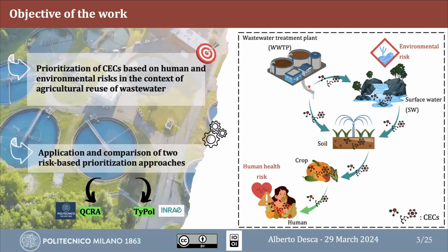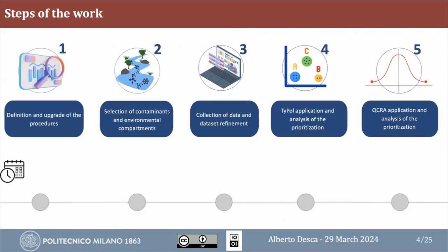The aim of my work was to prioritize these contaminants based on human and environmental risk in the context of agricultural use of wastewater — by applying and comparing two risk-based prioritization approaches: the QCRA (quantitative chemical risk assessment) procedure and the TYPOL procedure. Briefly, the steps of my work include: definition and upgrade of the procedures, selection of contaminants and environmental compartments, data collection and screening, application of both procedures, and analysis of results to finally prioritize the contaminants.